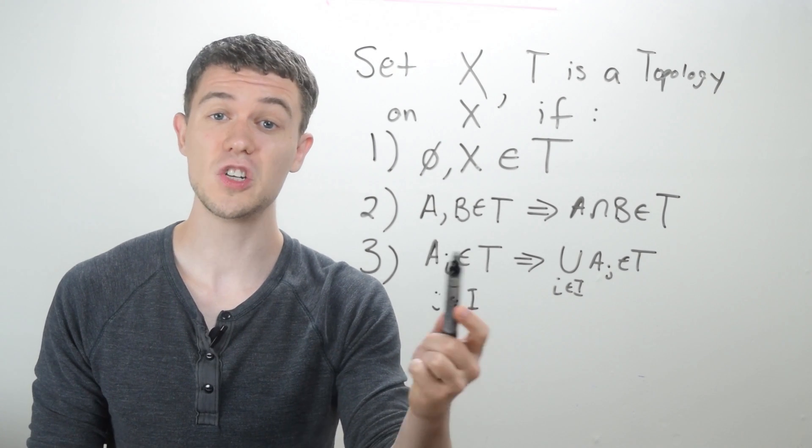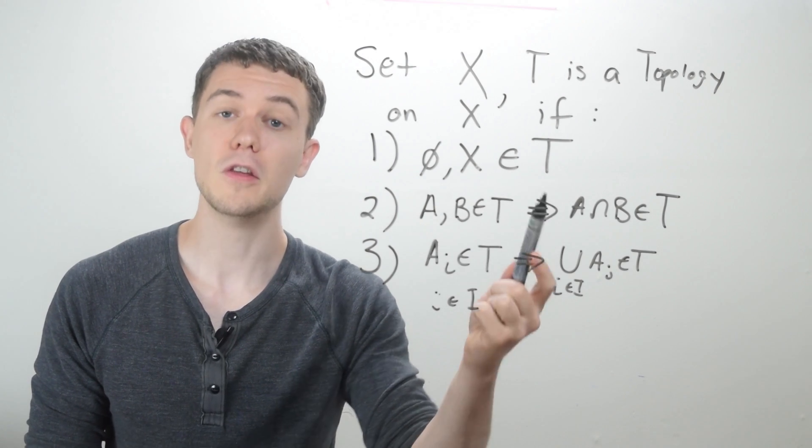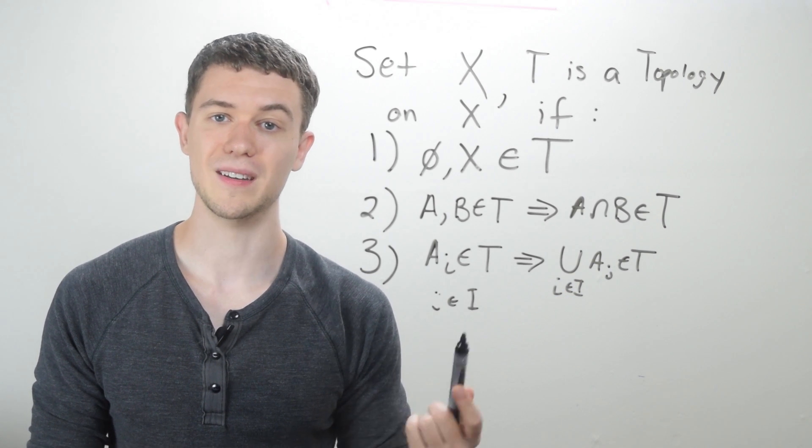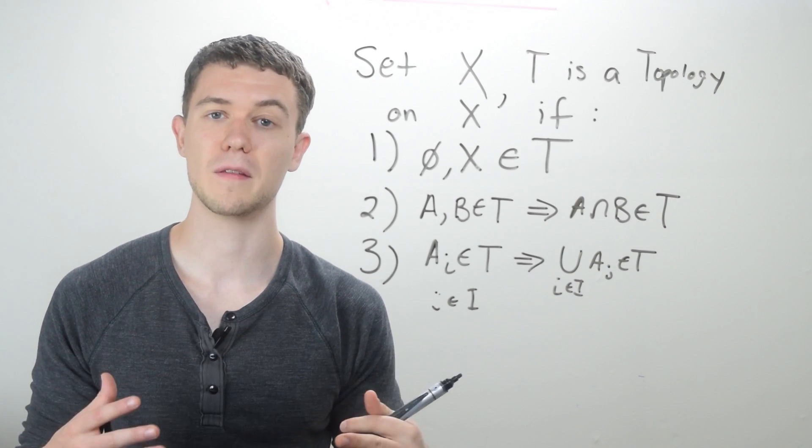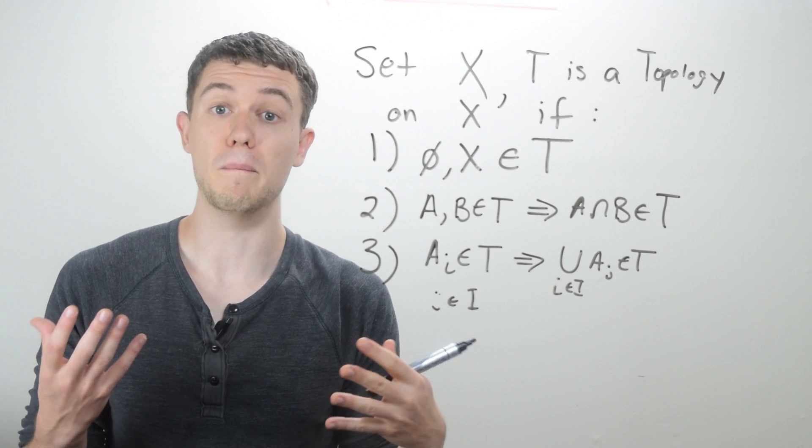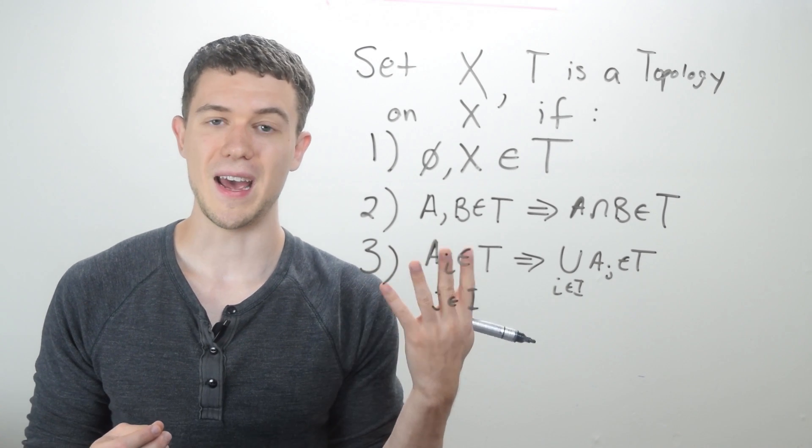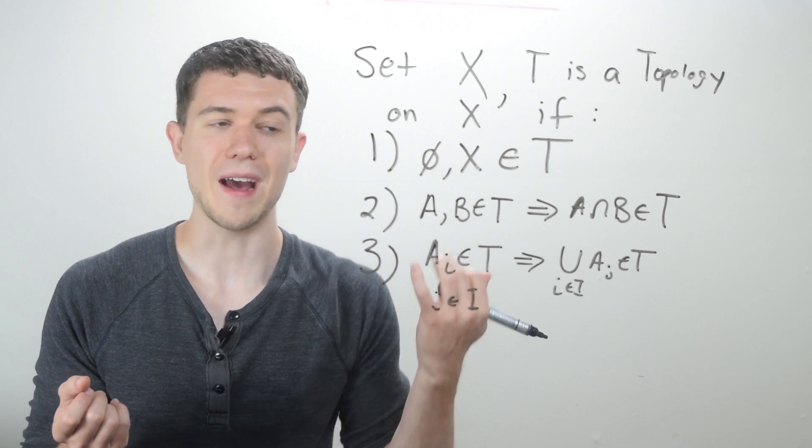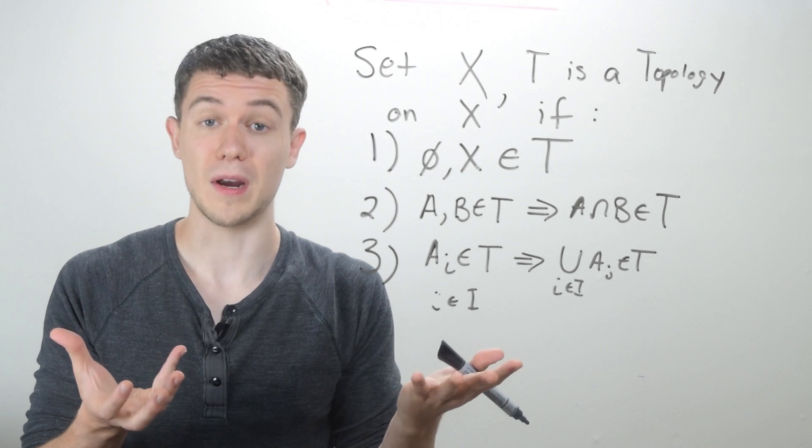So this is basically just saying for each element in the topology, their union is also in the topology. And union is just a mathematical way of saying both. So A union B would be everything from A, and also everything from B.